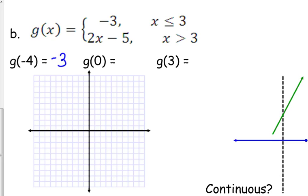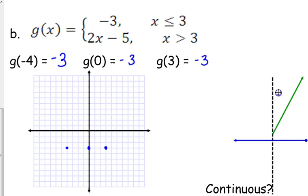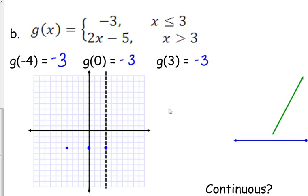Zero is also less than or equal to 3, so that also gives us negative 3. When x is 3, same answer — negative 3. I plot the points: negative 4, negative 3 and 0, negative 3. If we're graphing this again, you may find it helpful to put a vertical line at x equals 3. The left side will be a horizontal line at y equals negative 3.